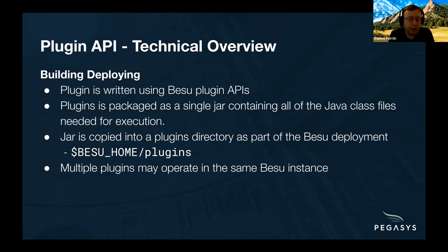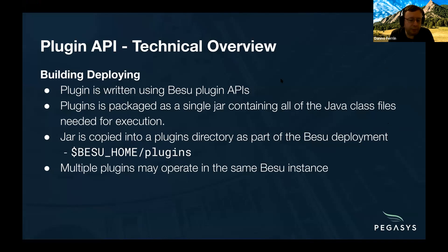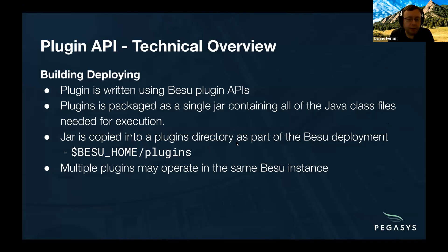When you write your jar and expose your service through the Java services API, Besu will then look into a specific directory — right now it's BESU_HOME slash plugins. Besu is going to look at all of the jars there, look for all of the Besu plugin services, and load all of those. You can put multiple plugins into a single instance of Besu. It's also worth pointing out that it needs to be a fat jar — if there is a library that Besu does not already have installed, like if you're accessing PostgreSQL or some other external database, you need to integrate it as a fat jar. Maven and Gradle and modern Java build systems know how to handle that.